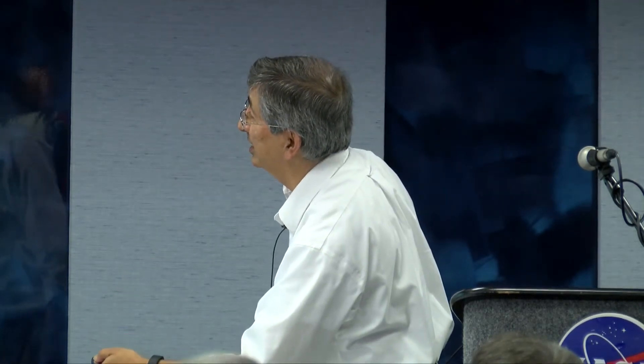What do we mean by interfacial tension? Here's a picture of an insect called a water strider — it can walk on water. That's because the molecules of water inside the bulk are very comfortable, but on the surface they're stuck together and form almost a molecular layer — it makes the surface a little rigid. If you lower that rigidity by putting soaps in there, you open it up and you can change things around. That's the basic concept.